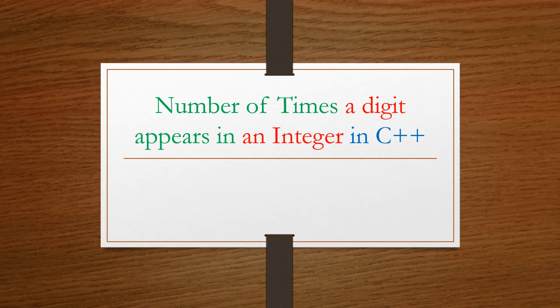Hello friends, welcome to Dennis Simplifies. In this video, we are going to compute the number of times a digit appears in an integer in C++. As usual, the algorithm first and then the code. So let's simplify.